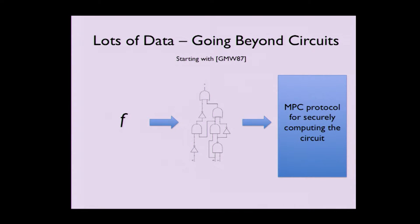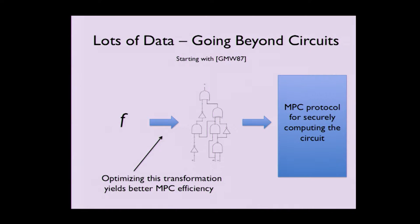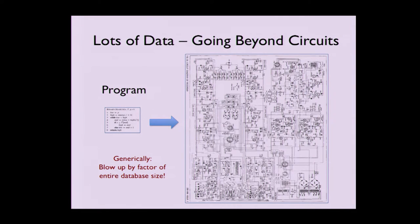Going back to the beginning of multi-party computation, these protocols typically follow this framework: you have some function f you want to evaluate on the inputs, first convert it to some circuit form, then from the circuit representation compile it generically into an MPC protocol. Optimizing this compilation step could lead to a much more efficient protocol. However, when you start with a lightweight program like binary search and convert it to a circuit, the size of the circuit can blow up to as big as the size of the whole data.